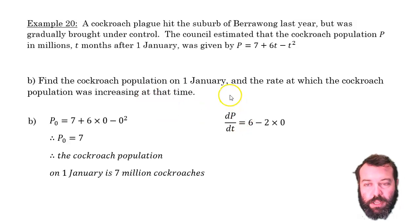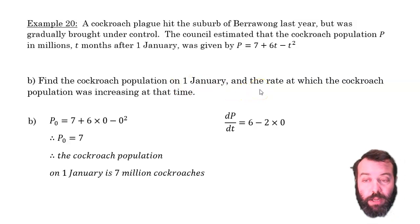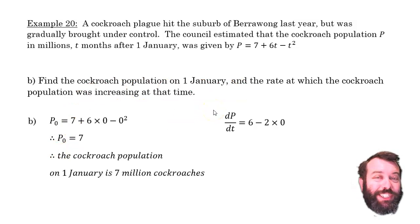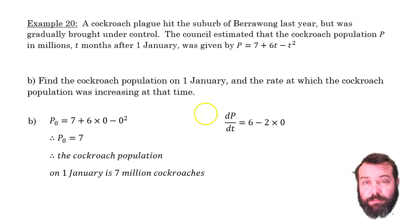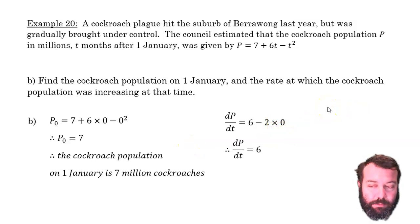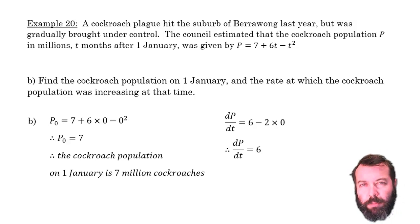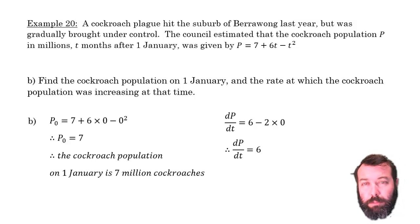It also asks: at that time, what was the rate the population was increasing? The rate of change is given by the derivative. Our derivative was 6 − 2t; substituting t = 0 gives 6. So on the 1st of January there are 7 million cockroaches, and at that point in time the cockroach population is increasing by 6 million per month.